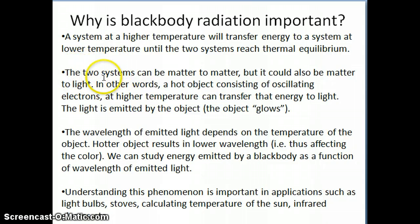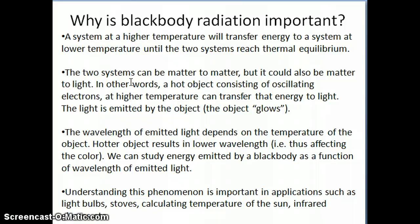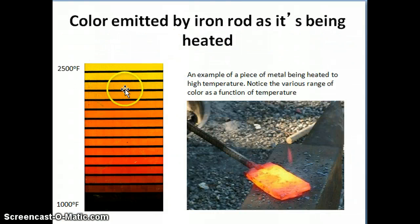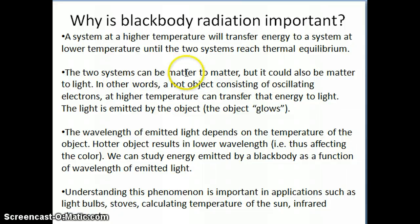In Topic 6, when we talk about transfer of energy through heat, we're primarily talking about systems that both consist of matter — for example, coffee in a coffee cup at a higher temperature transferring energy to the air around it. The coffee particles lose energy and the air particles gain it until they reach thermal equilibrium. Both water and air consist of particles — they're both matter. But you can also have this transfer of energy from matter to light, and that's really what's going on with black body radiation.